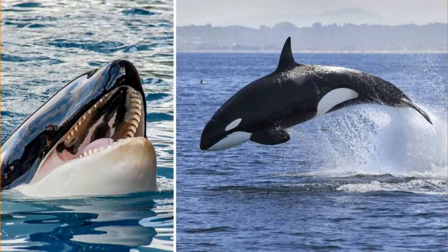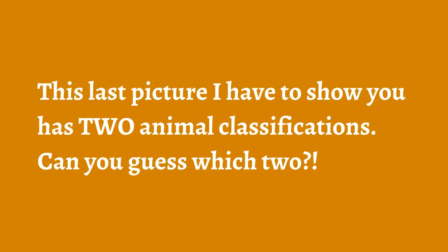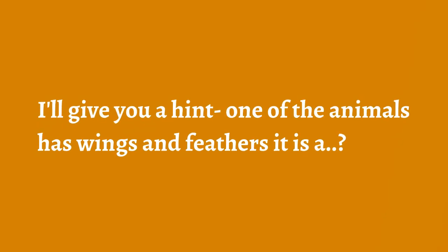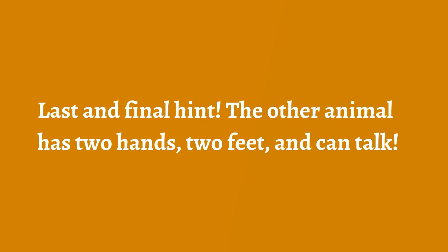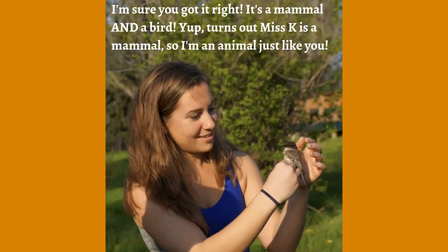Tigers are mammals, and orca whales are mammals. Now for a final quiz — this last picture shows two animal classifications. One of the animals has wings and feathers: what's the only classification of an animal that has wings and feathers and can fly? The other animal has two hands, two feet, can talk, and might be giving you this lesson right now. You definitely got it right — it's a mammal and a bird. It turns out Miss Kay is a mammal, and I'm an animal just like you!